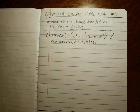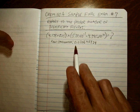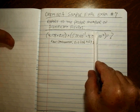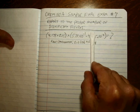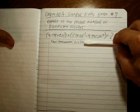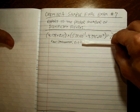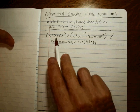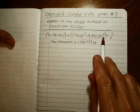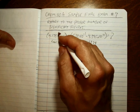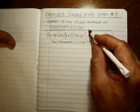So your answer is going to have some number of sig figs — your job is to figure that out. You can't tell just by looking at the raw value. You have to figure out the sig figs within the parentheses.